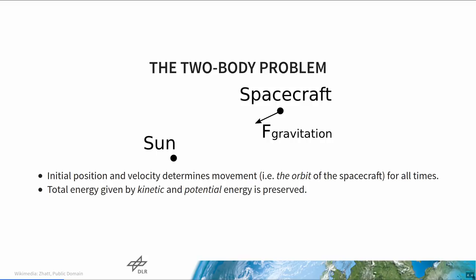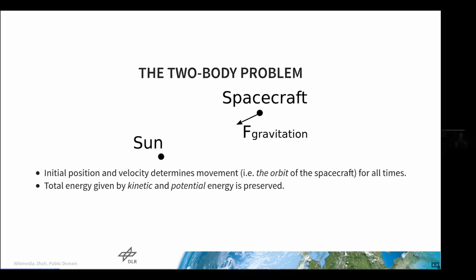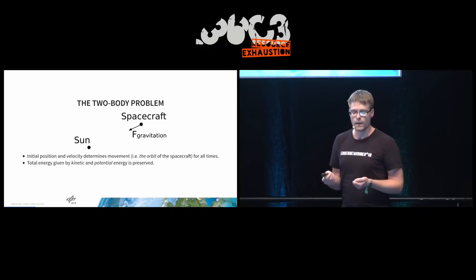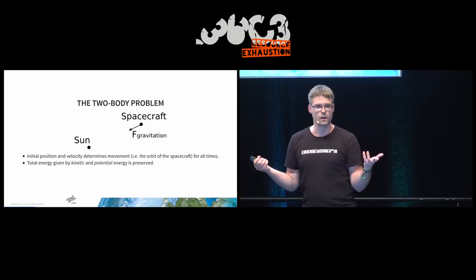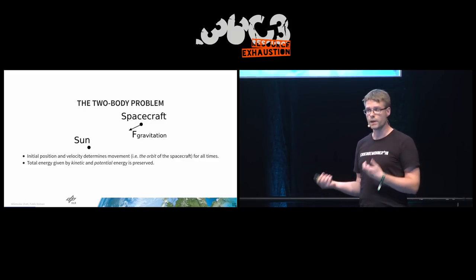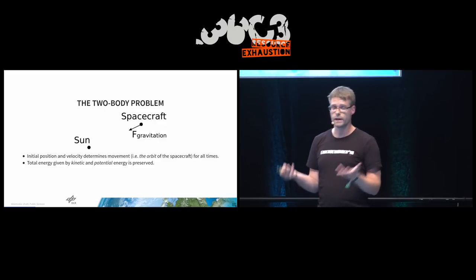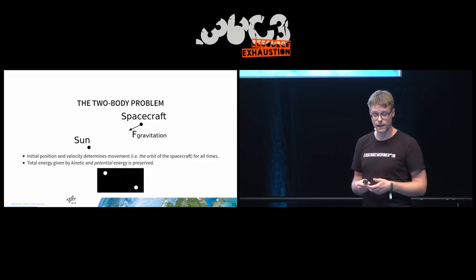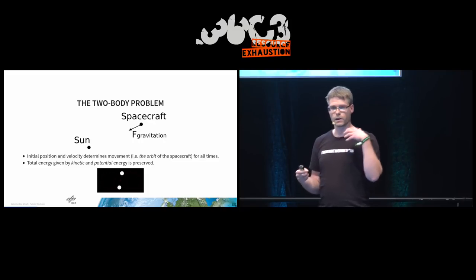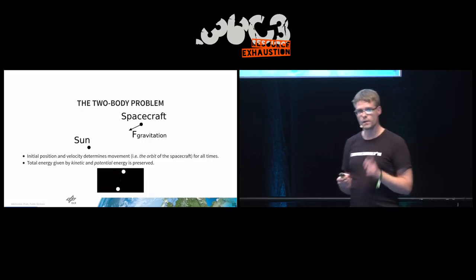There's one other thing you may know from day-to-day life. If you take an object, put it high up and let it fall, it will accelerate. One way to describe this is by looking at energy. There is kinetic energy related to movement and velocity, and there is potential energy related to the gravitational field. The sum of those energies is conserved. This means that when the spacecraft moves closer to the Sun, its potential energy decreases and its kinetic energy increases — so it actually gets faster.